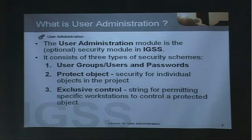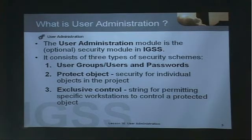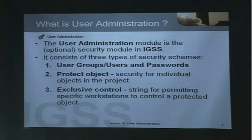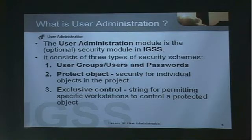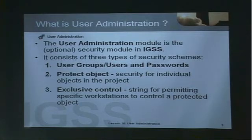What is user administration? The user administration module is the optional security module in IGSS. It consists of three types of security schemes. The first level: user groups, users and passwords. The second level: protect object — security for individual objects in the project or configuration. And the third level: exclusive control — a string configured for permitting specific workstations to control a protected object. In our exercise, we will only cover the first two levels: user groups and the protect object.